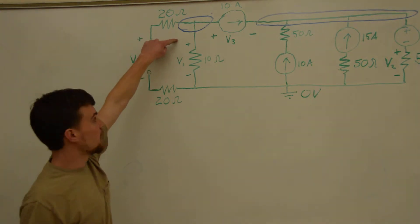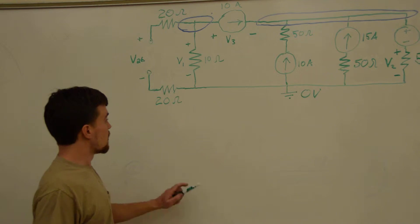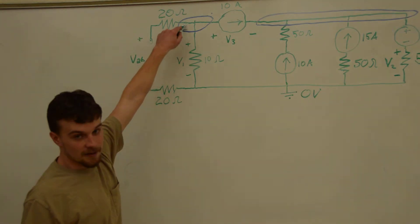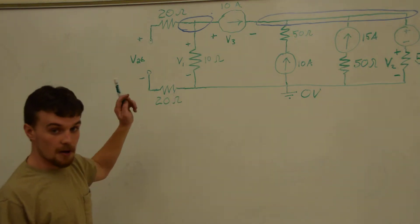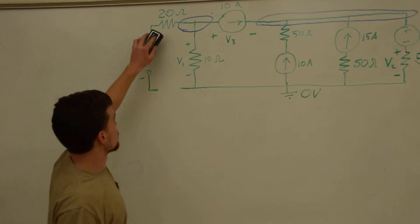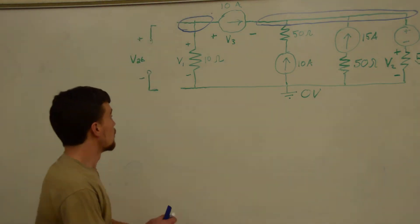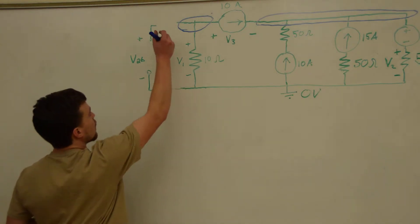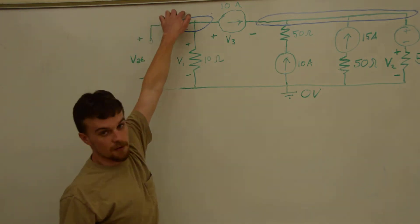That means no current can flow in this branch, and therefore the voltage on this side of the resistor is the same as on this side of the resistor, and the same with this resistor. So essentially we can get rid of these resistors, and then these are just parts of these two nodes.